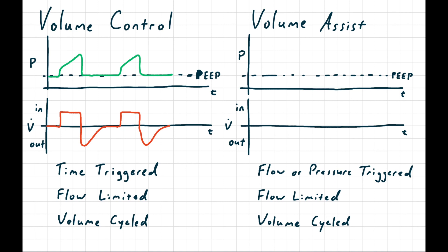The circuit pressure starts at PEEP because we're at end expiration. Flow is zero because the circuit pressure matches the pulmonary pressure. If the patient tries to take a breath themselves, the circuit pressure is going to go down a little bit because the patient is effectively sucking on the endotracheal tube. That will also trigger a little bit of flow into the patient if the inspiratory valve is able to open. The ventilator then recognizes either the drop in pressure or the increase in flow.